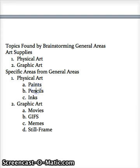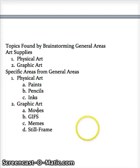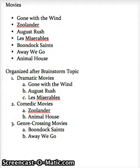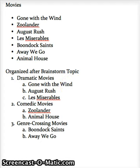For instance, if your main body points were physical art and graphic art, you might talk about under physical art: paints, pencils, and inks. Under graphic art, you might talk about movies, GIFs, memes, and still frames. So you either want to start from those general areas and figure out more specifically what you're going to talk about, or start from your specific topic areas and figure out what your overarching categories are. This is all just to help your audience understand how your speech is going to be organized and make it more memorable.